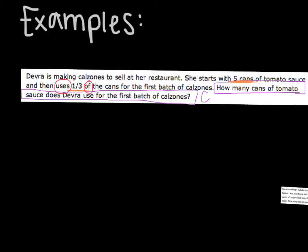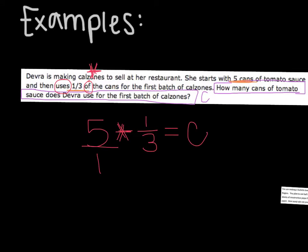You have to include the sign of 'of.' I know that 'of' means multiplication, so I'm going to put a multiplication sign there. And then we're going to write an expression. So she starts with five cans and then she uses one-third of — 'of' means multiplying. I'm going to multiply one-third, and I know when I'm multiplying, this is going to give me how many cans she used.